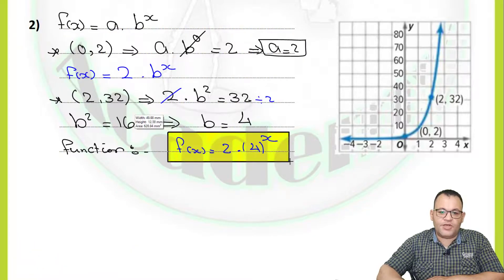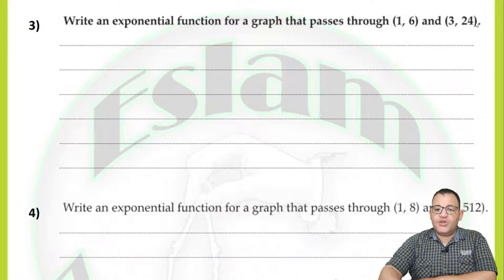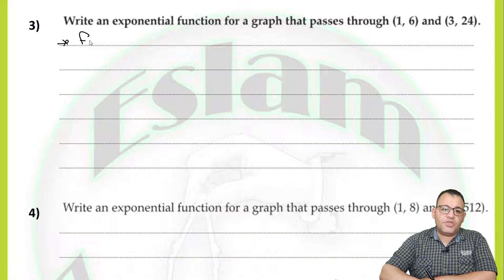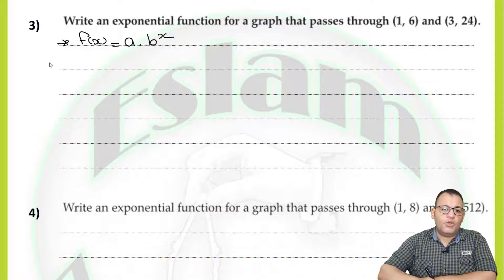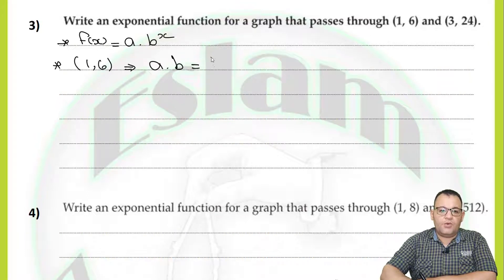So now we can say the function would be f(x) equals a, which equals 2, multiplied by b, which is 4, raised to the power x. And that would be the function for the graph. Now, write an exponential function for the graph passing through the points (1, 6) and (3, 24). I will start with the function f(x) equals a multiplied by b to the power x. We will use the first point (1, 6): x equals 1, y equals 6. So a multiplied by b to the power 1 equals 6. That is the first equation.